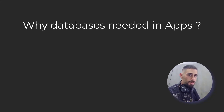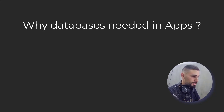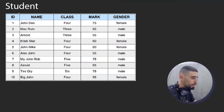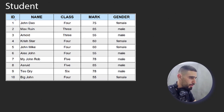Databases are represented by one table or multiple tables. Let's take a look at how a table is represented in a database. As you can see, this is a table that holds students' information in a school. This table has five columns and ten rows. A column can also be called an attribute, and a row can be called a record.